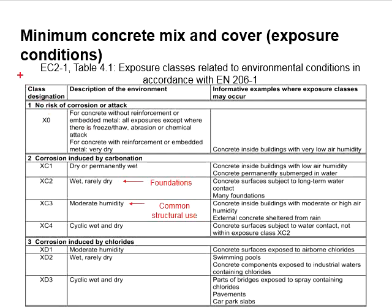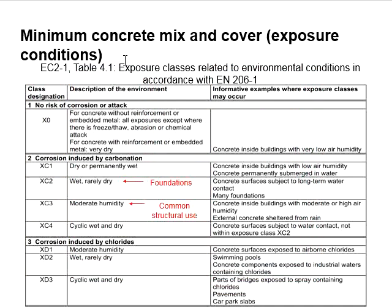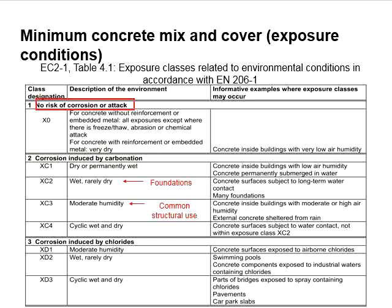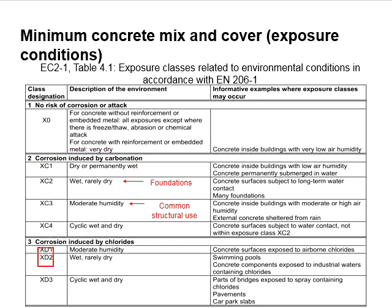In the table there, there are three columns. The first column represents the class code. Each class code represents different conditions. For class X0, there is no risk of corrosion. For class XC, there will be corrosion due to carbonation. For class XD, the corrosion is due to chloride.